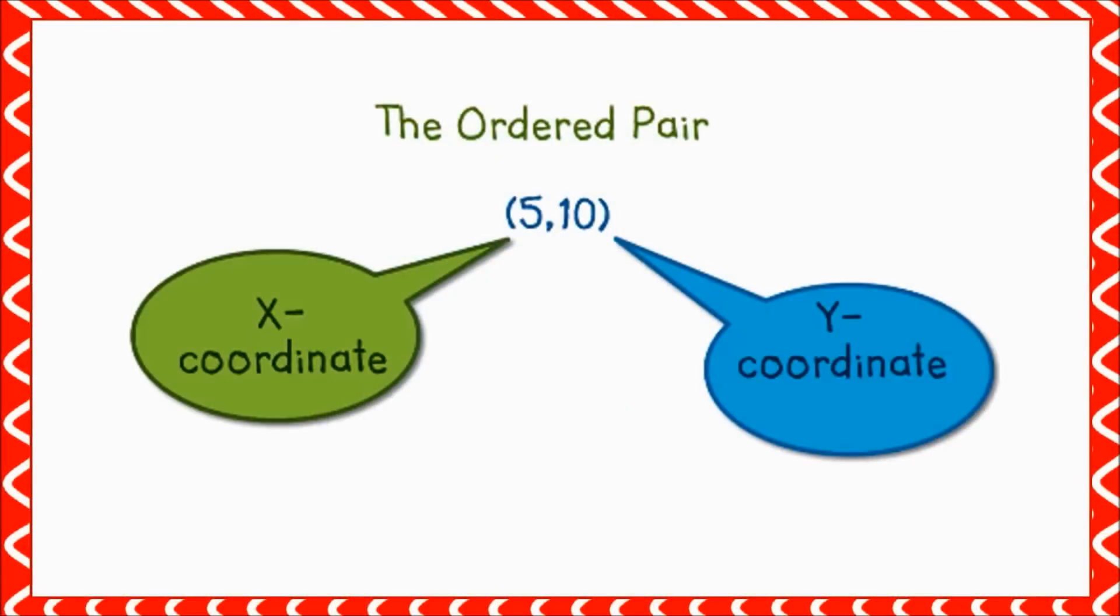It is important for students to understand that ordered pairs must always appear within parentheses, and that when ordering pairs, the x-coordinate always appears first and the y-coordinate second. A common mistake that students often make is that they think it does not matter which direction they move in first to describe the location of points on the grid.